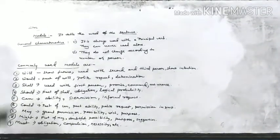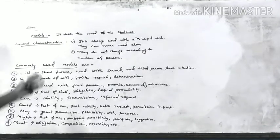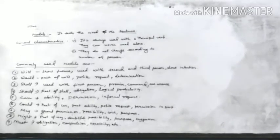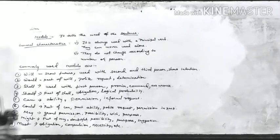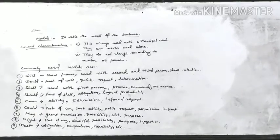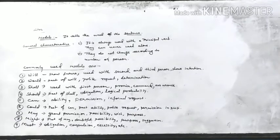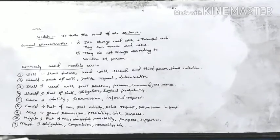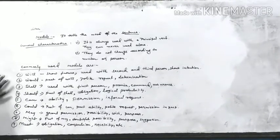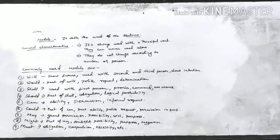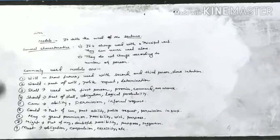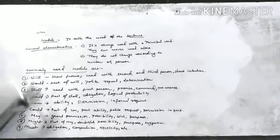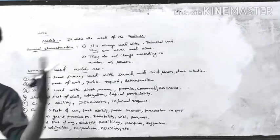Today we will discuss some modals. 'Will' — we all know that will is used to show the future. Will is used with second and third person subjects, and it shows intention — meaning what we intend to do, something we have not yet done but are thinking of doing. 'Would' is the past of will. Would shows polite request — for example, 'Would you give me your pen?' — and also determination.